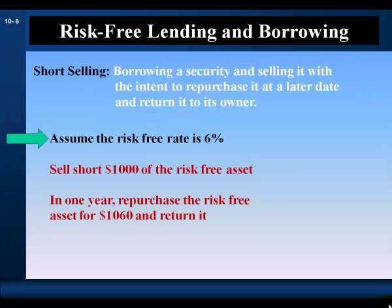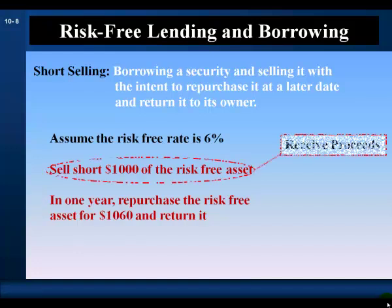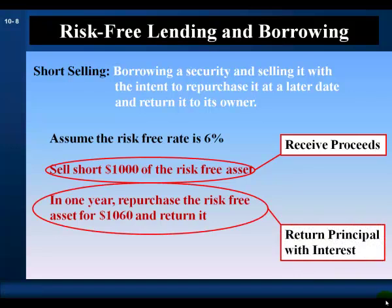Let's assume the risk-free rate is 6% and we sell short $1,000 of the risk-free asset. In one year, we repurchase the risk-free asset for $1,060 and return it. The 6% return is certain because it's risk-free, so we know the purchase price must be 6% higher — $1,060. This is a borrowing transaction: we receive the proceeds of the loan and at a later date return the principal with interest. So we can borrow at the risk-free rate through a short-selling transaction.